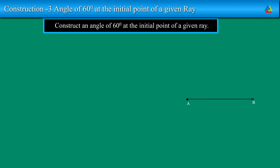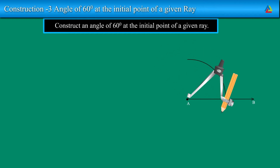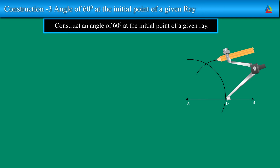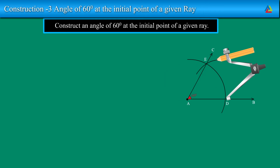Here, we need to construct a ray AC such that angle CAB is equal to 60 degrees. Taking A as center and some radius, we will draw an arc of a circle which intersects AB at D. Taking D as center with the same radius, we will draw an arc intersecting the previous arc at E. Draw a ray AC passing through E. Thus, angle CAB is equal to 60 degrees.